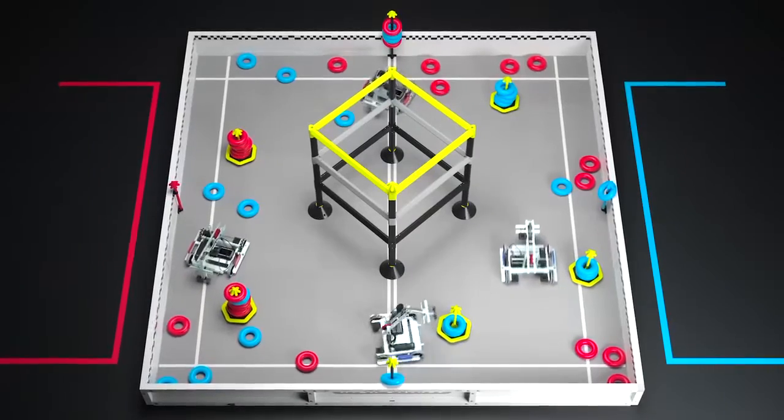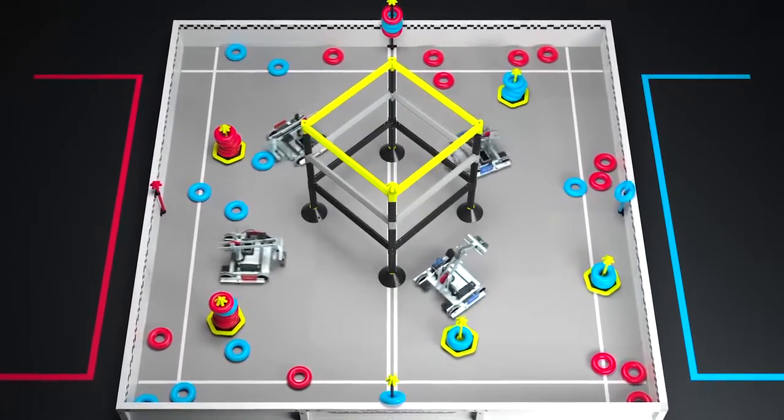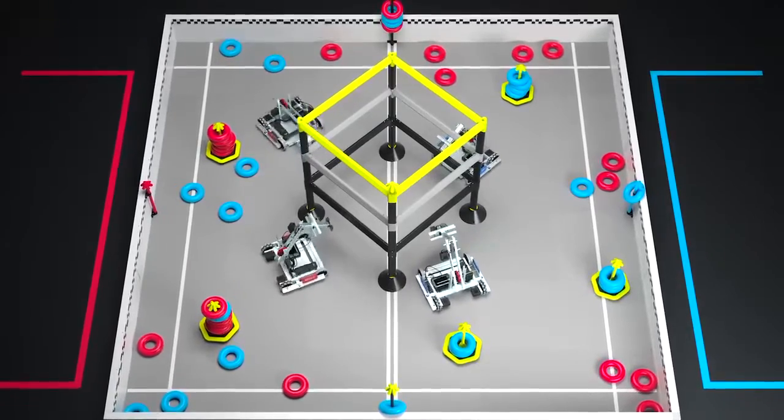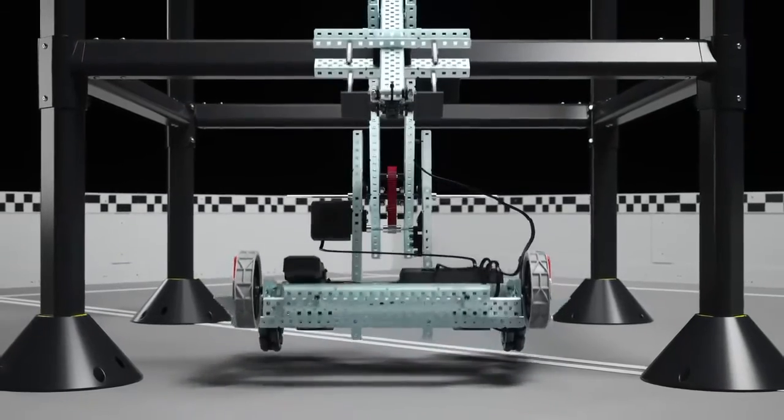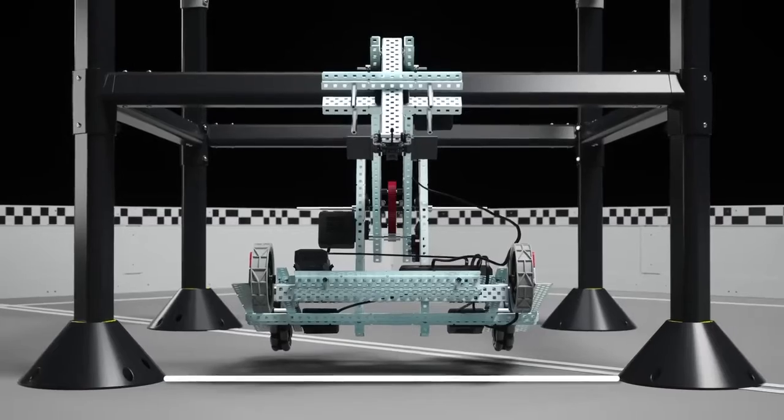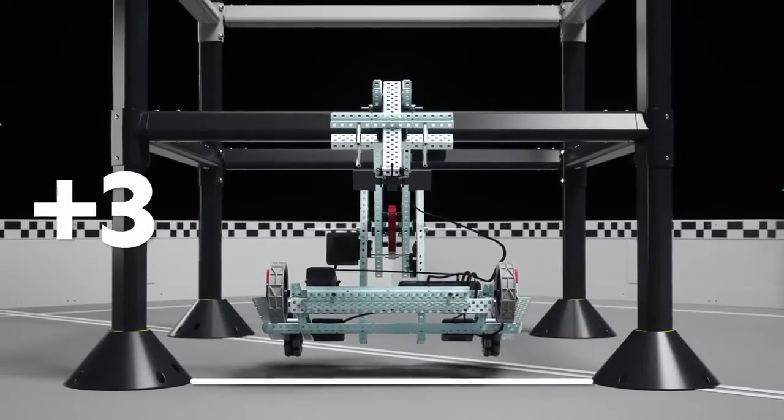At the end of the match, robots can earn additional points by climbing the four foot tall ladder. Using the first bar of the ladder to get your robot off the ground is considered a level one climb and is worth three points.